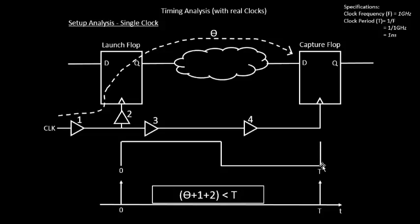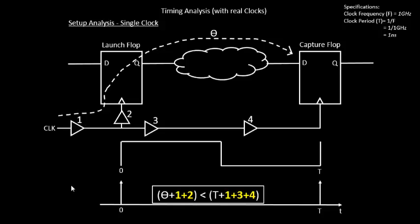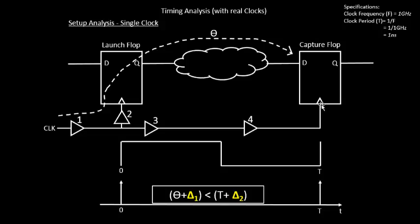Similarly, the clock edge that was supposed to arrive at the capture flop at T nanoseconds will now arrive at T plus buffer delays 1, 3, and 4. Let's call the launch flop clock network delay delta 1 — the time for the clock to travel from the clock source to the launch flop clock pin. And let's call the capture flop clock network delay delta 2 — the time for the clock edge to travel from the source to the capture flop clock endpoint.